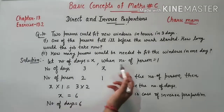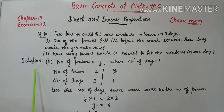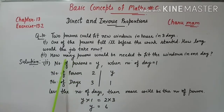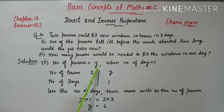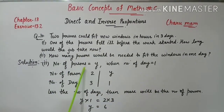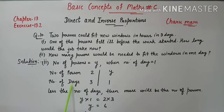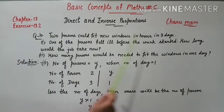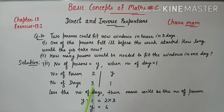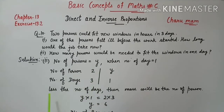Number of days 6 हैं जब number of persons 1 है — यह था first part का solution। Now we start the solution of the second part. हमें number of persons find करने हैं — let number of persons = y, when number of days = 1. हम table form करेंगे number of persons and number of days।